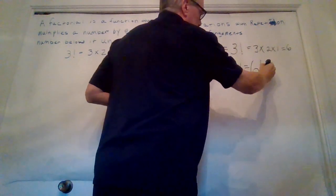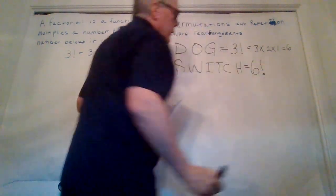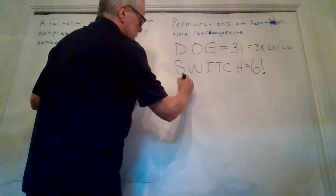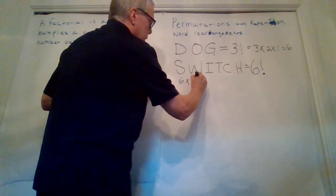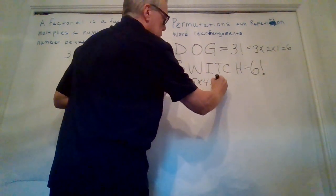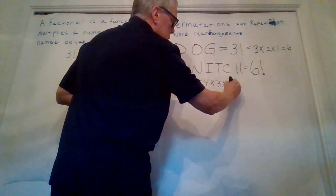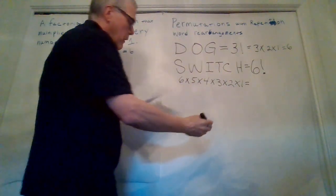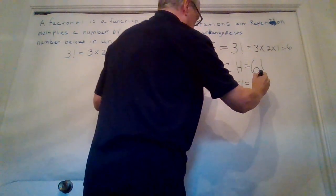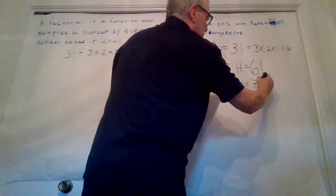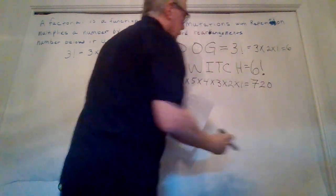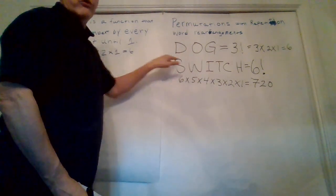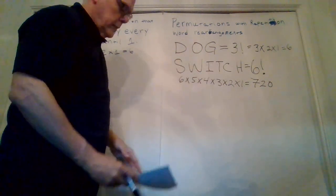So our 6th factorial is going to be 6 times 5 times 4 times 3 times 2 times 1, which if you multiply it all out is going to equal 720. So there are 720 different variations you can do with the word switch in it.